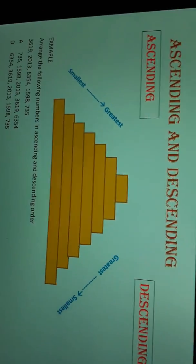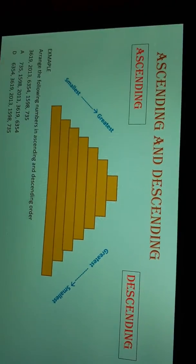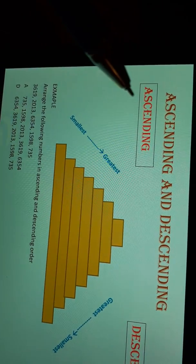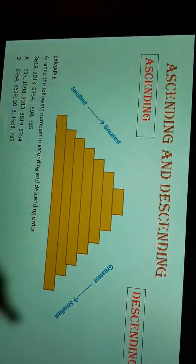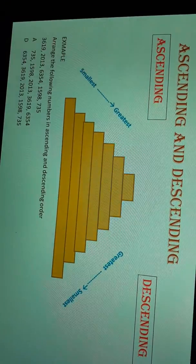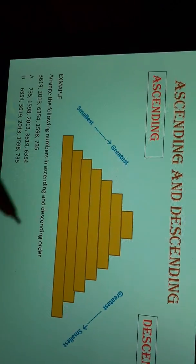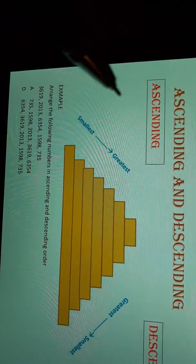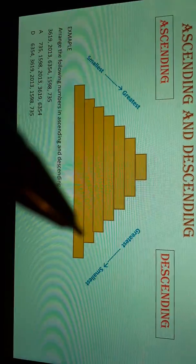This is ascending and descending order. If we go up — ascend — means going from smallest to greatest. And if we are coming down — descend — means going from greatest to smallest. So ascending means smallest to greatest, and descending means greatest to smallest.